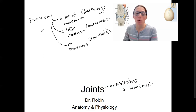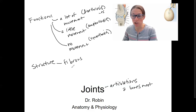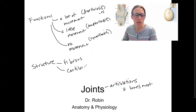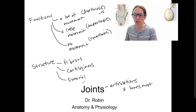We can also categorize joints by their actual structure, which often relates to function. Structurally, you can have a fibrous joint — that's going to be dense regular connective tissue made out of fibers. You can have cartilaginous joints, made from either hyaline or fibrocartilage. And then you can have synovial joints, which are more complex structures such as the knee, elbow, hip, and fingers.